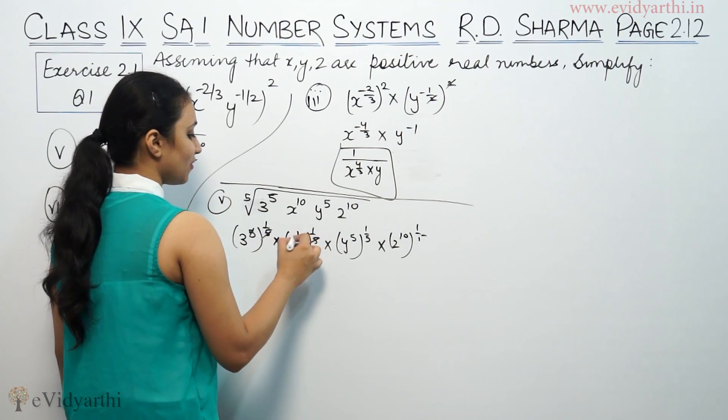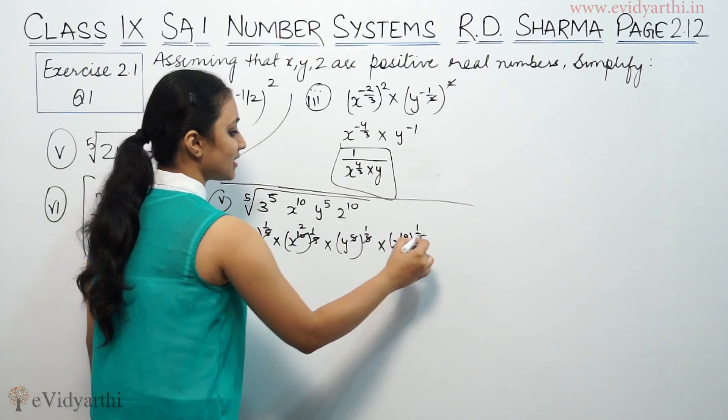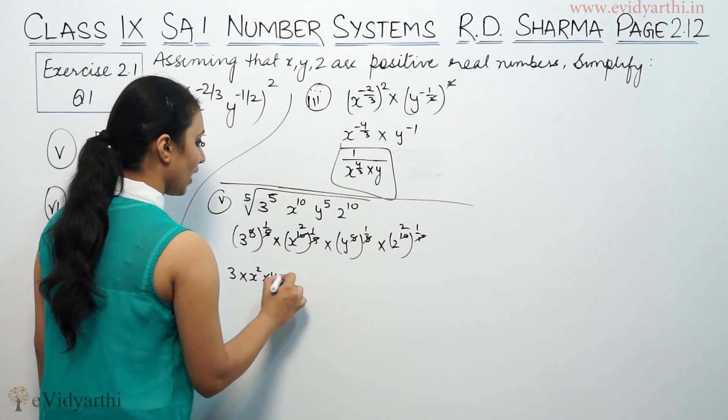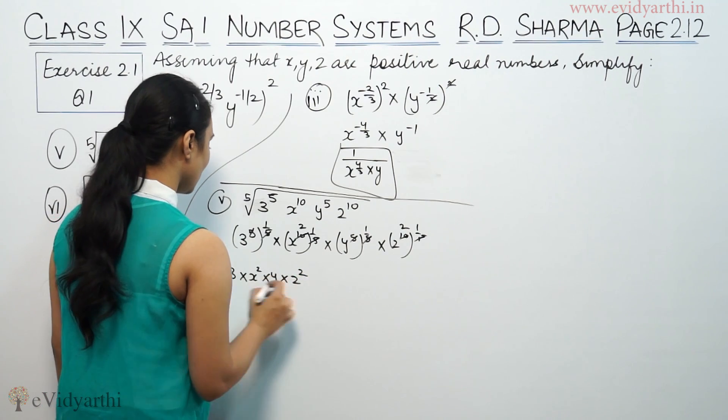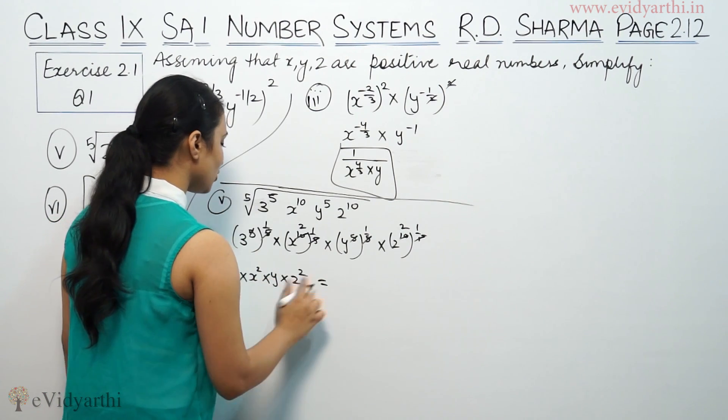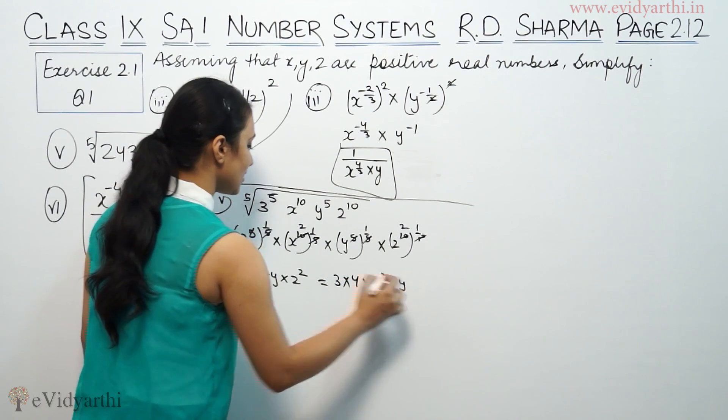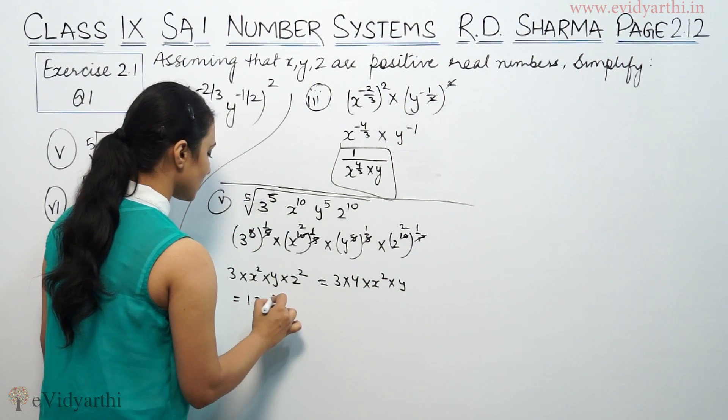Z to the power 10 will also be 1/5, which is 2. 243 to the power 1/5 is 3. So this is 3 into X squared into Y into Z squared. So this will be 3 into 4 Z squared into X squared into Y. So this will be 12 Z squared X squared Y.